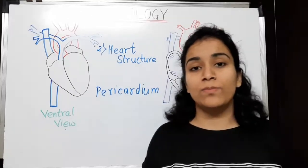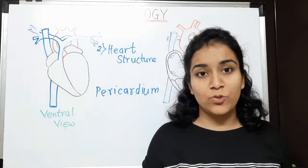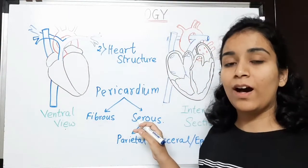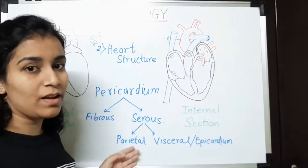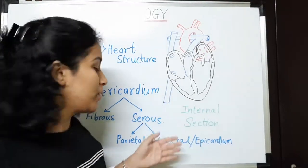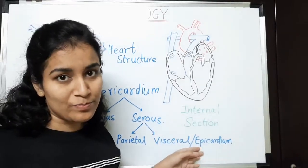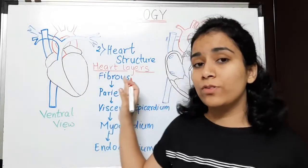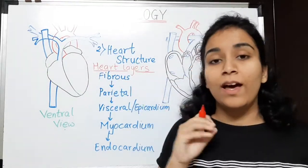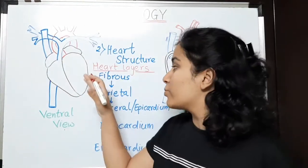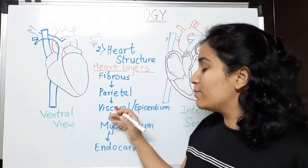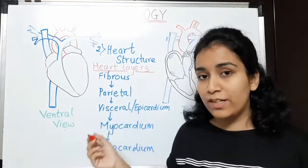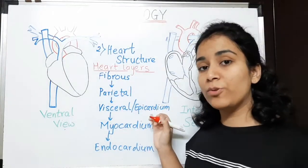This pericardium is divided into two layers. That is divided into fibrous and serous. Again, this serous is divided into parietal, outer layer and visceral, inner layer. Visceral is also known as epicardium. So now, let's see sequential-wise the layers of heart. We are now going to see heart layers from outer to inner side. So, first layer is fibrous layer. Then comes our serous layer. Serous is divided into two, which is parietal and visceral. Parietal is outer layer and visceral is inner layer. Visceral is also known as epicardium.